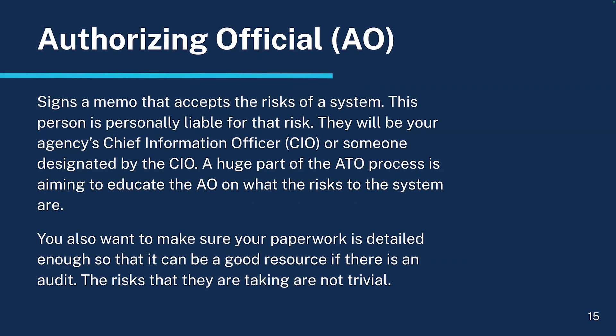The Authorizing Official, or AO, signs the memo that accepts the risk of a system. This person is personally liable for that risk. They will be your agency's Chief Information Officer, or CIO, or someone designated by the CIO. A huge part of the ATO process is aiming to educate the AO on what the risks to the system are. You'll also want to make sure your paperwork is detailed enough so that it can be a good resource if there's ever an audit. The risks being taken on here are not trivial.